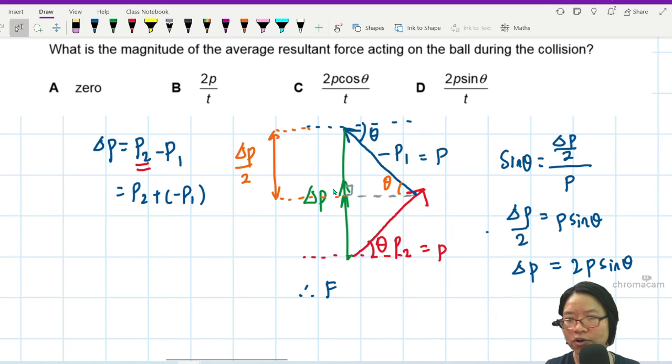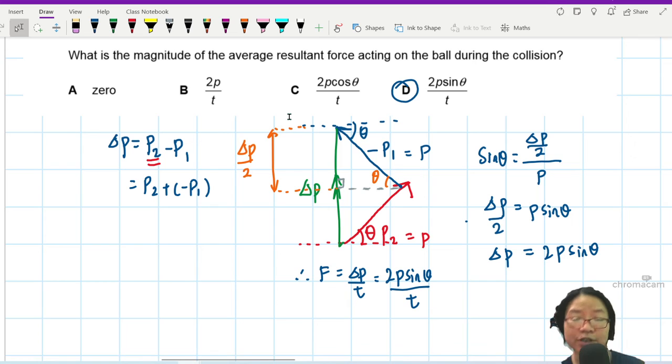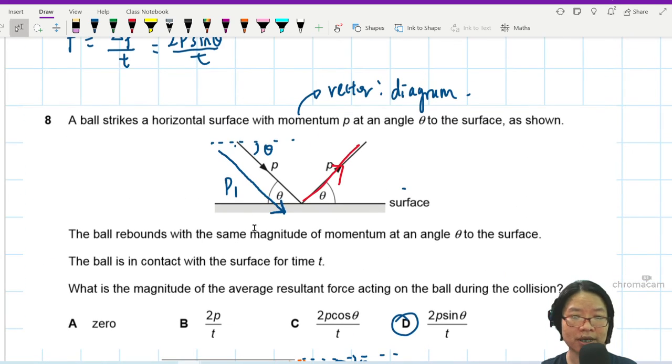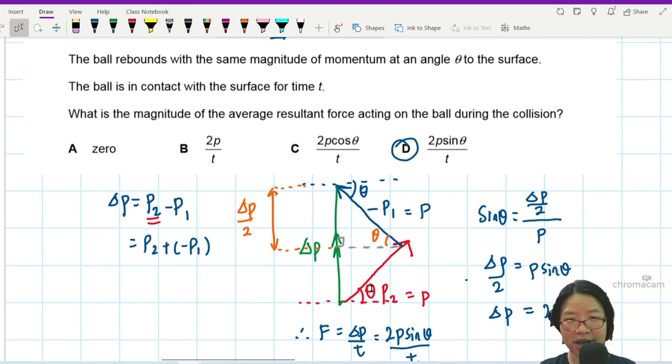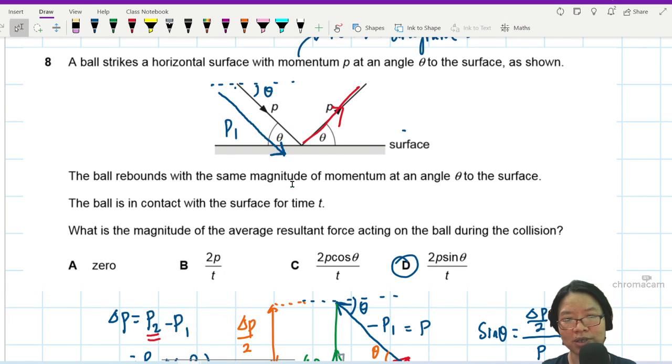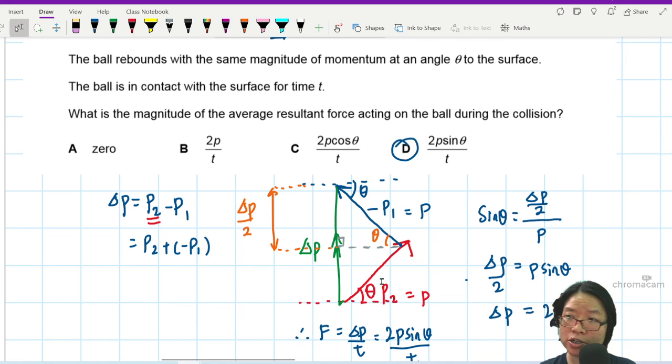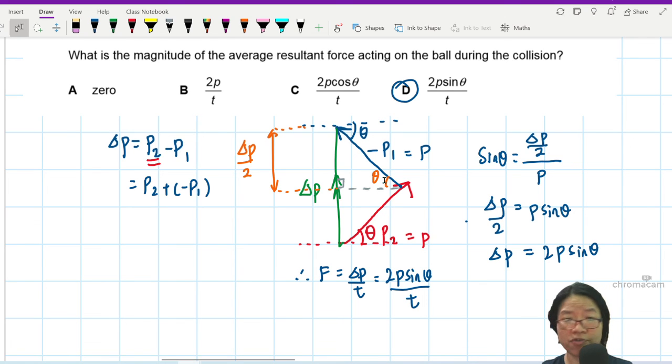So hence, force is change in momentum over time. So that would be 2p sin theta divided by t. So for certain people who are more inclined to geometry, drawing a vector diagram is faster. I'm fairly confident that the triangle is straightforward because both p's have the same theta and the same magnitude. So this is an isosceles triangle. Whenever I have an isosceles triangle, I can easily build a right-angle triangle. And from the right-angle triangle and normal trig, sine, cosine, I'm quite confident that I can find the change in momentum.